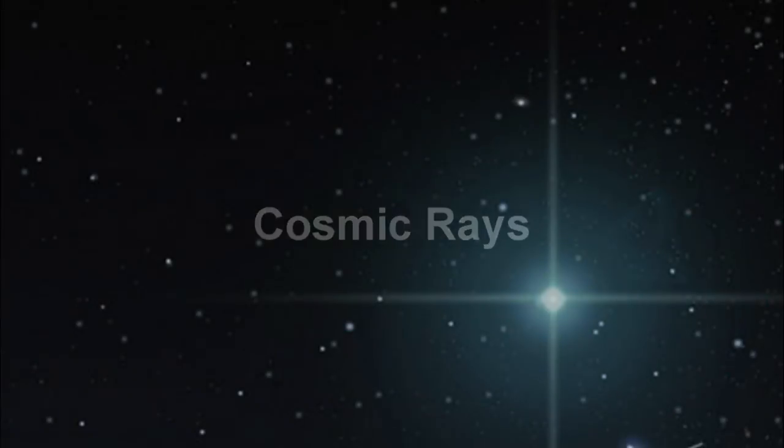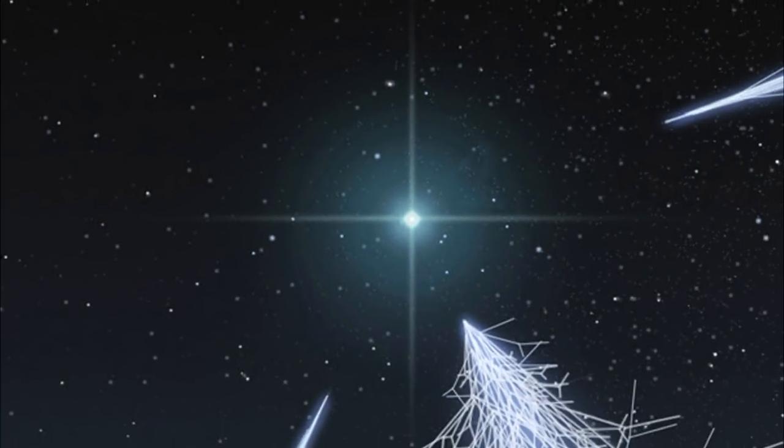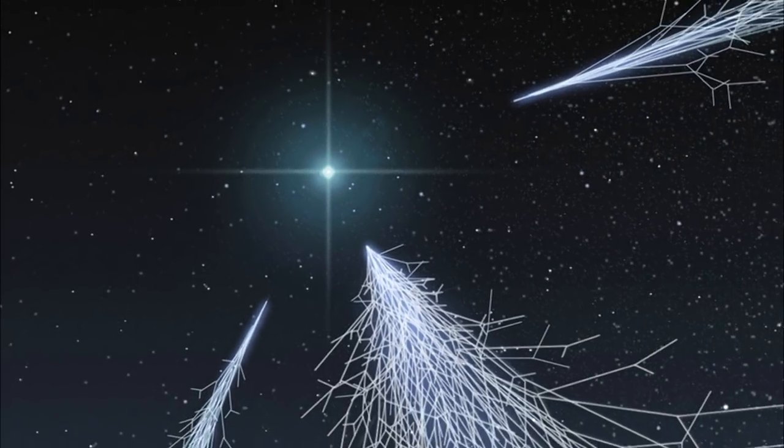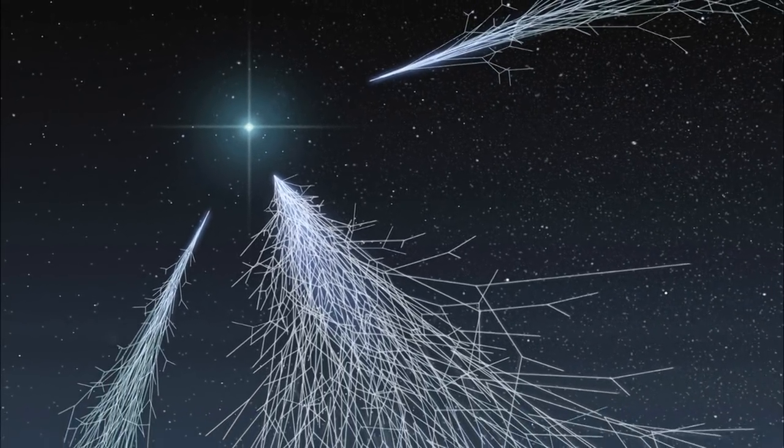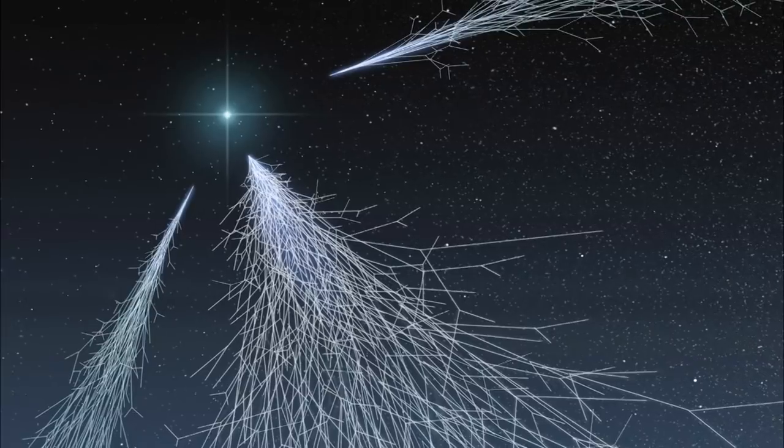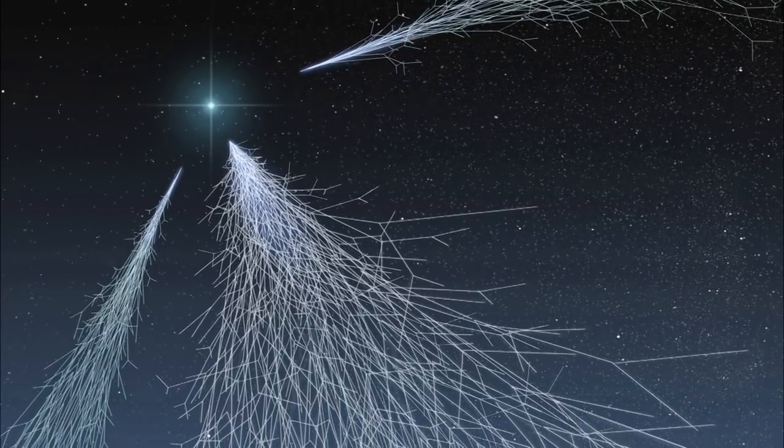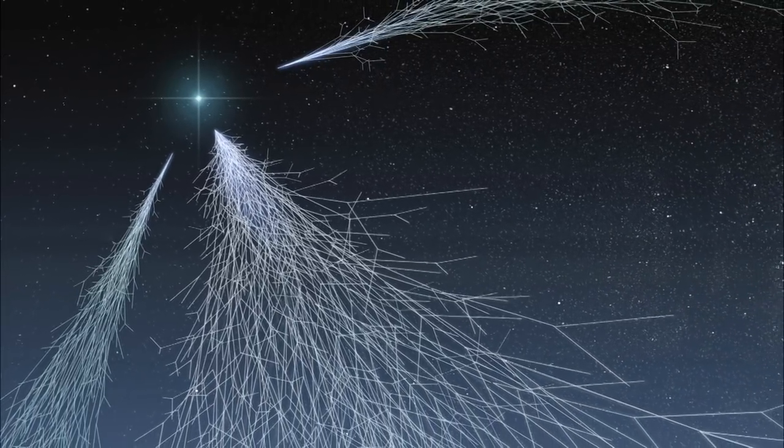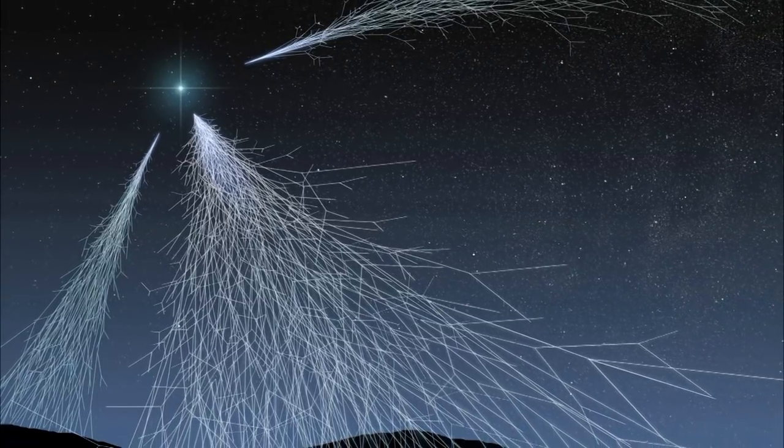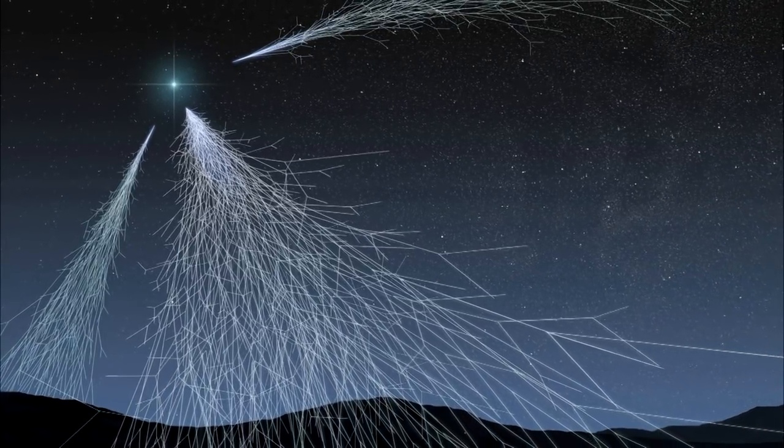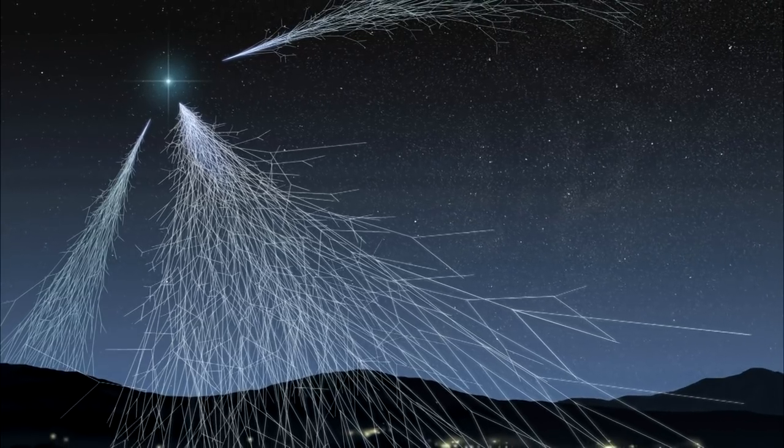The Earth is constantly bombarded by radiation from outer space, called cosmic rays. These cosmic rays are made up mostly of high-energy protons and high-energy photons called gamma rays. Cosmic rays collide with atoms in our atmosphere, generating particle chain reactions that continue all the way down to the surface.